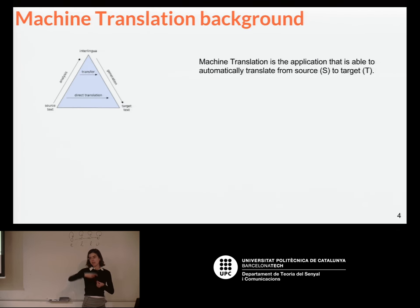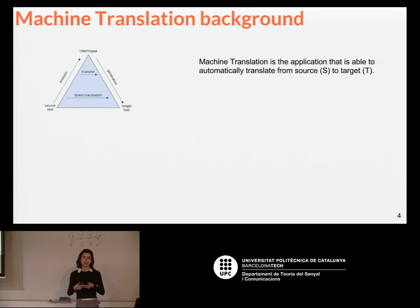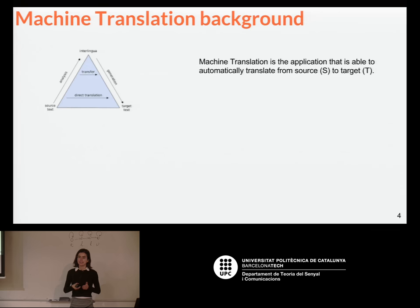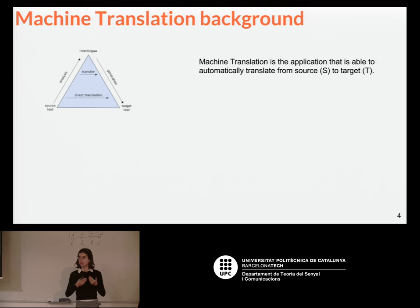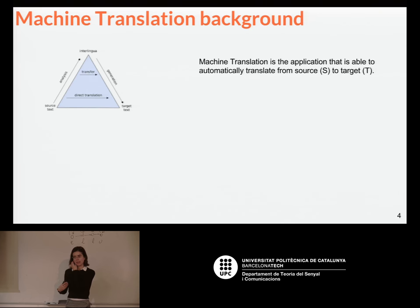You can go in the middle doing a transfer-based approach — that would be the rule-based system. And then you have the interlingua. Until now, this interlingua was created manually. For example, the Esperanto language wanted to be an interlingua among all languages. The idea is that you analyze the source text with rules, morphology, and knowledge, transform it into the interlingua, and from the interlingua you go into the target text.